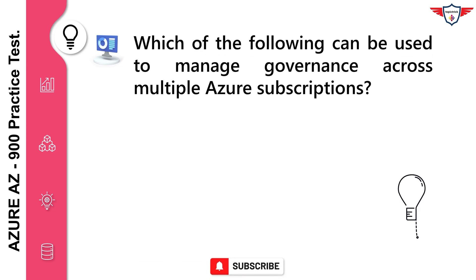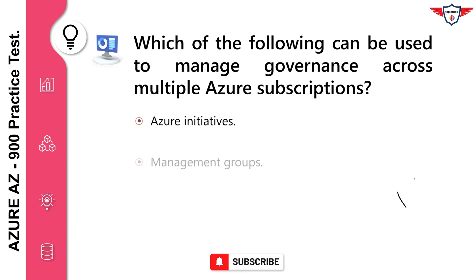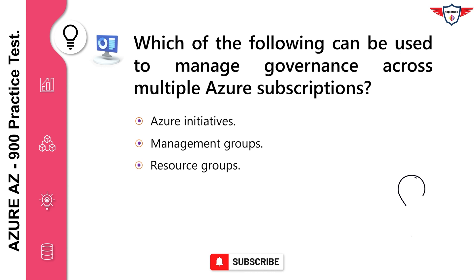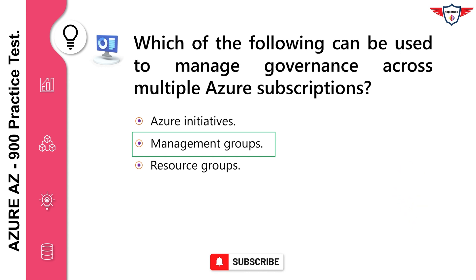Which of the following can be used to manage governance across multiple Azure subscriptions? Azure initiatives. Management groups. Resource groups. The correct answer is management groups. Management groups facilitate the hierarchical ordering of Azure resources into collections at a level of scope above subscriptions. Distinct governance conditions can be applied to each management group, with Azure Policy and Azure role-based access controls to manage Azure subscriptions effectively. The resources and subscriptions assigned to a management group automatically inherit the conditions applied to the management group.